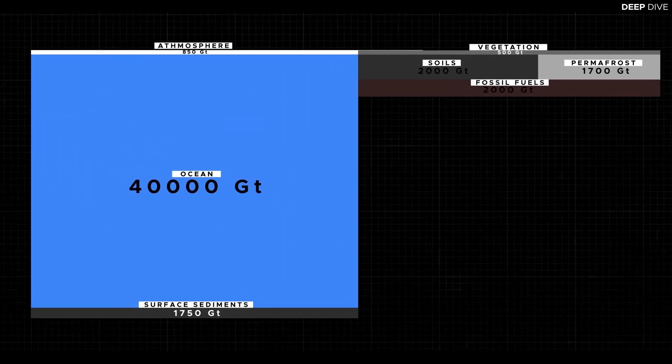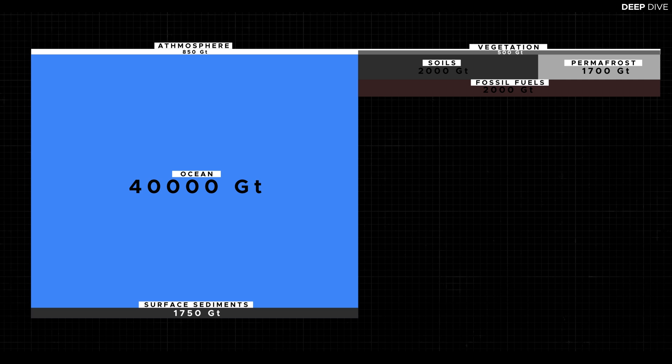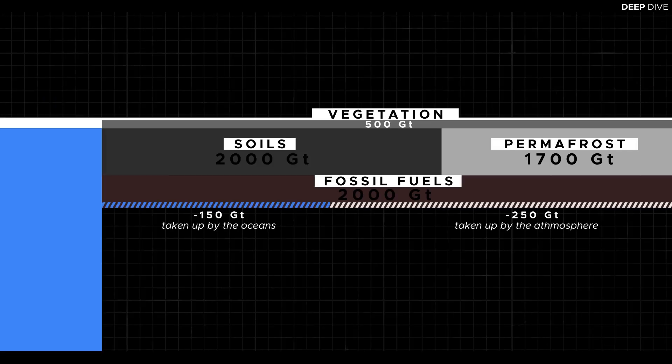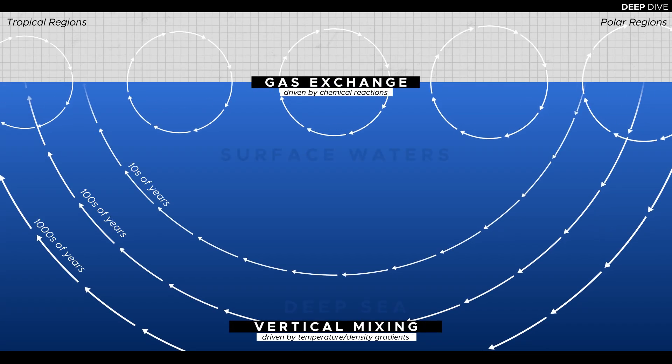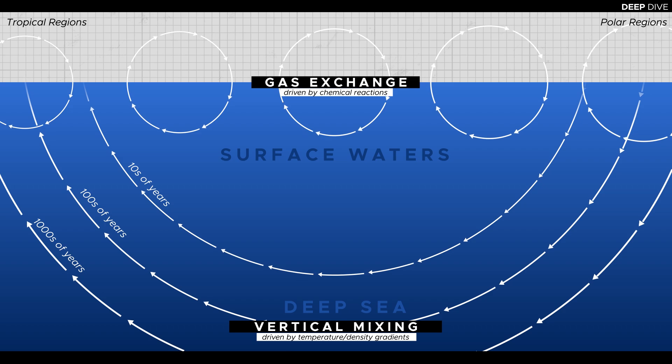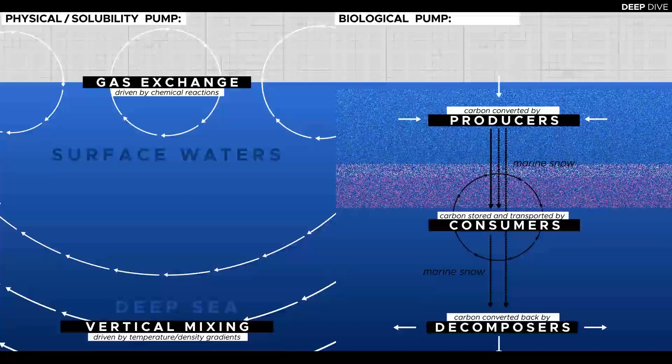The ocean is by far the largest carbon reservoir on the planet, and an important carbon sink that has absorbed an estimated 40 percent of all carbon produced by humanity since the industrial revolution. Most of the carbon that enters and leaves the oceans every year as part of the natural carbon cycle does so through simple physical and chemical processes. However, there is also a considerable amount of carbon that is moved by the so-called biological pump.